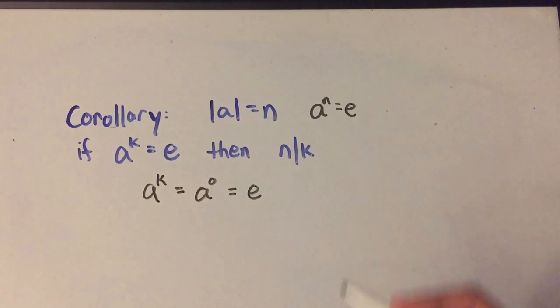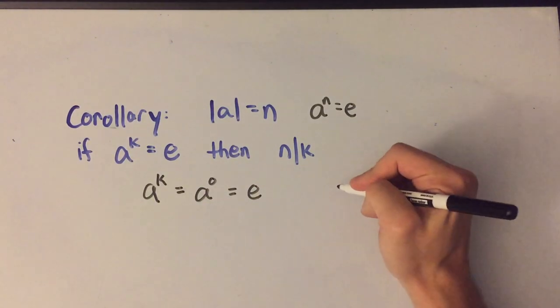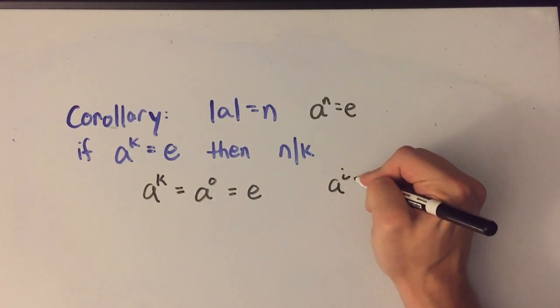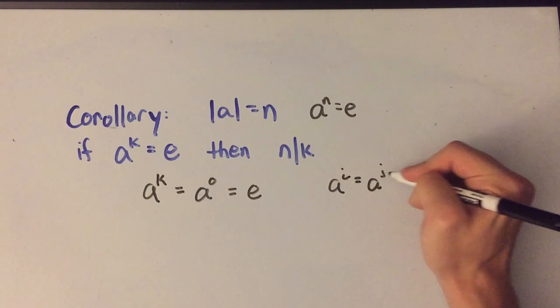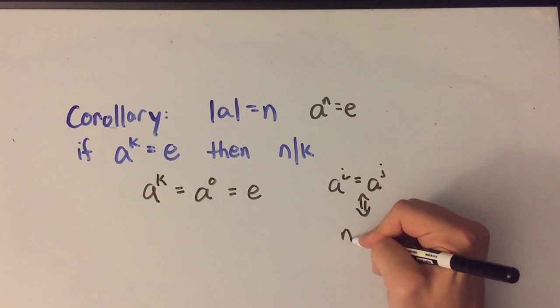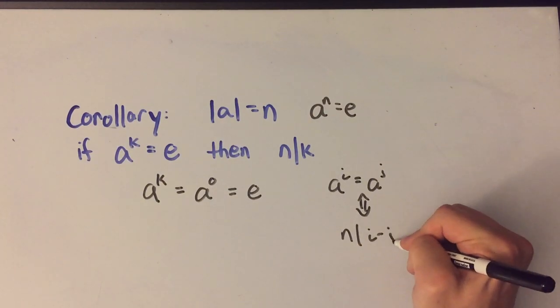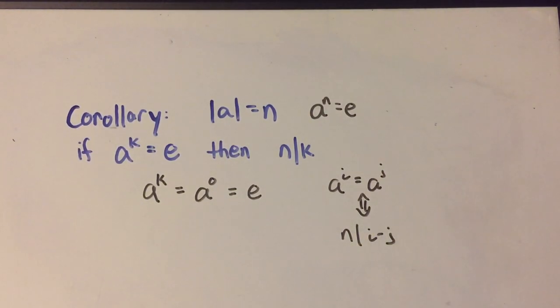Well from the theorem I proved in my previous video, which you might want to check out, I know that a to the i is equal to a to the j if and only if n divides i minus j. And this is for finite order a.